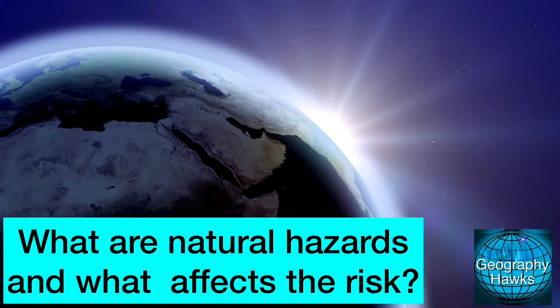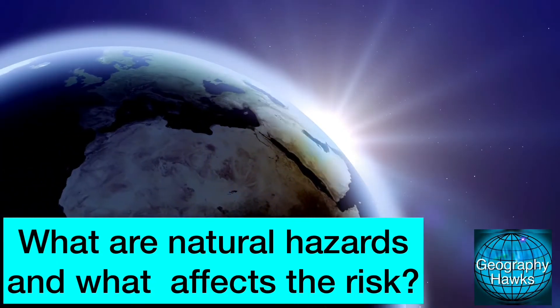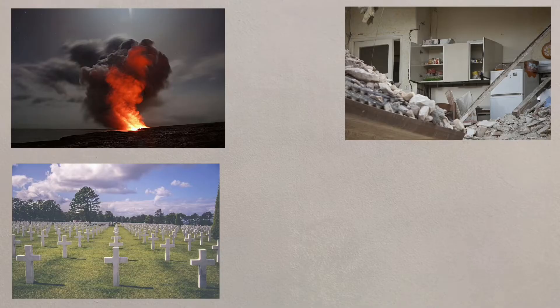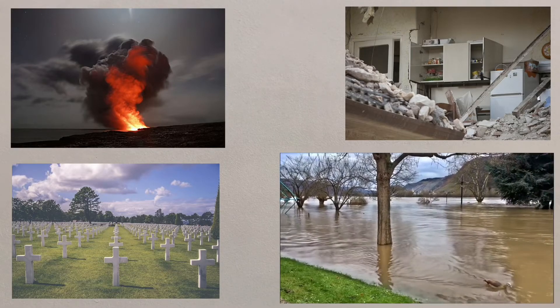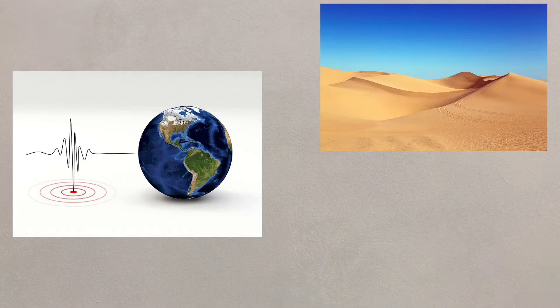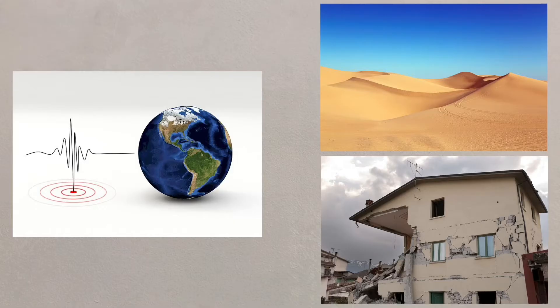Natural hazards are by definition just that — something which occur naturally and that are hazardous to us as people. Natural hazards can have enormous social impacts, with thousands of people every year dying in these events. Flooding usually accounts for the largest number of deaths. These are naturally occurring events, and if an earthquake happened in the middle of an empty desert, then it isn't hazardous. Only when an event, like an earthquake, hits people and their activities does it become a hazard, even a disaster.